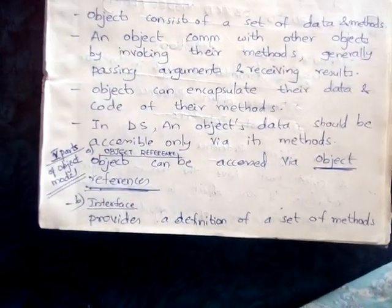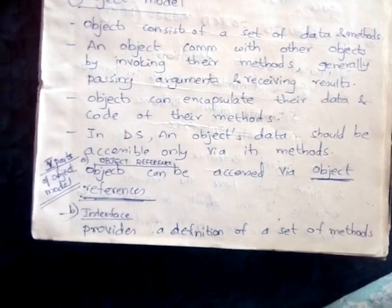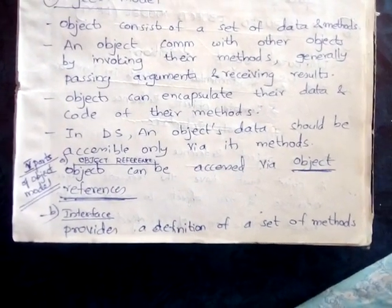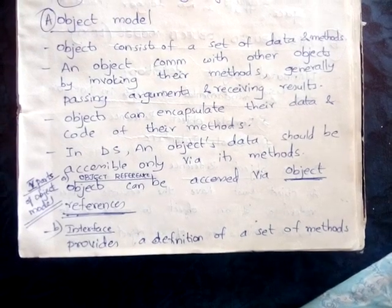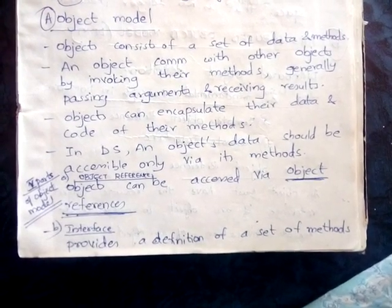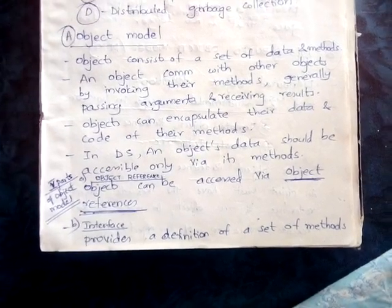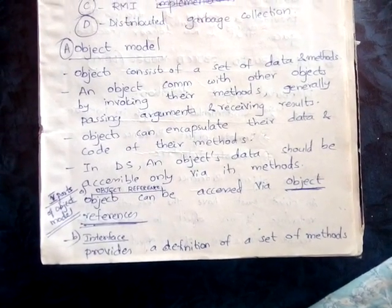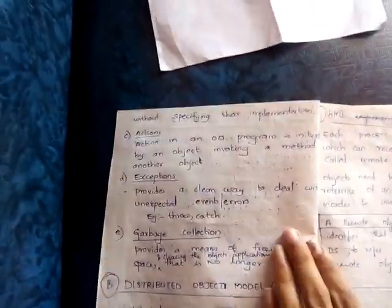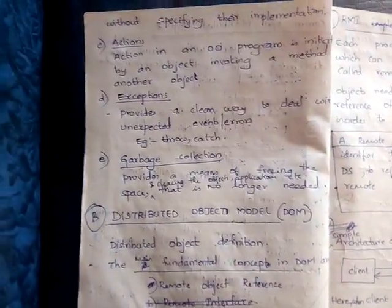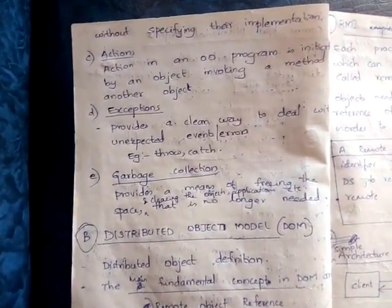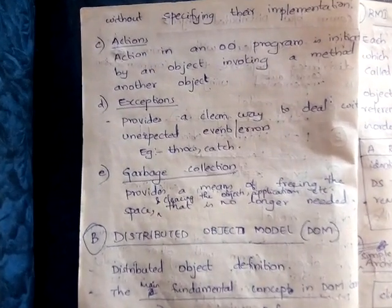Next we look at the five important parts of the object model. The first one is object reference — objects can be accessed via object references. The second one is interface — it provides a definition of a set of methods without specifying their implementation. The third one is actions — an action in an object-oriented program is initiated by an object invoking a method of another object.